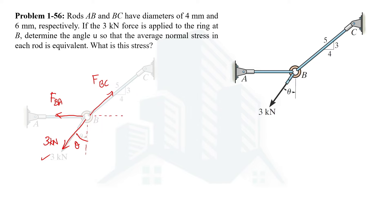How about the FBC force — what angle is it making? We are given a right angle triangle, and with the help of this we can calculate the angle. Using the inverse tangent formula, 3 divided by 4, the inverse tangent gives us theta as 36.87 degrees.